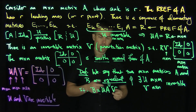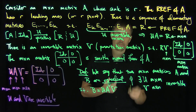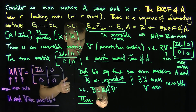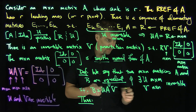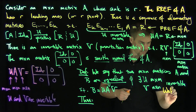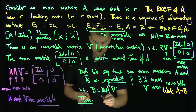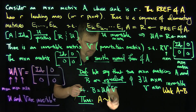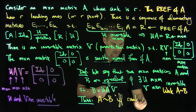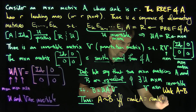We know that two matrices are equivalent if and only if they have the same rank. That's our theorem: A is equivalent to B if and only if the rank of A equals the rank of B.